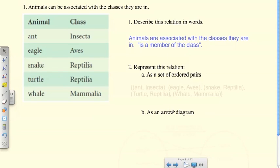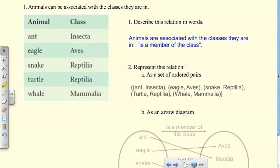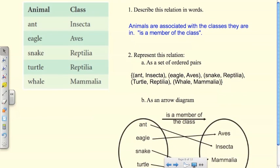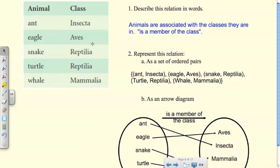Okay, so here are the answers for that one. We're talking about animals and their classes. A class is just a way of categorizing animals and they kind of make sense. Ant is part of the class Insecta, eagle is part of the class Aves, snakes Reptilia, turtles Reptilia, whales Mammalia.